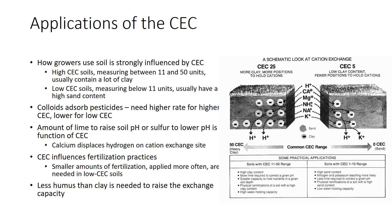How growers use soil is strongly influenced by CEC. High CEC soils measuring between 11 and 50 units usually contain a lot of clay. Low CEC soils measuring below 11 units usually have a high sand content. Sticky soils are high in the types of clays having the highest CEC. CEC is one of the factors that determines how much herbicide should be spread on the soil. Colloids absorb pesticides as well as nutrients; therefore clay and humus tend to tie up many chemicals. As a result, we often have to apply higher chemical rates to high CEC clay soils than low CEC sandy soils. On sandy soils, one must be more cautious to apply a pesticide at a lower rate to avoid toxicities. The amount of lime needed to raise soil pH, or sulfur to lower soil pH, is also a function of CEC. In the process of liming soil, calcium displaces hydrogen on cation exchange sites. The more exchange sites in the soil, the more lime is needed. Therefore, growers apply much more lime to correct acidity on fine-textured soils than on coarse-textured soils.